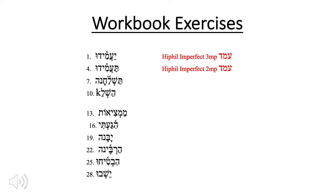What about number seven? Number seven is also pretty straightforward, with the tav prefix with the patah to tell us that this is a Hiphil. We have the tsere under the lamed, which confirms it's a Hiphil. We have nun at the end, which tells us that this is 3fp or 2fp from shalak.